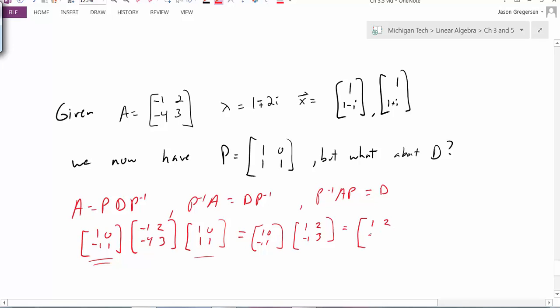And when I multiply these two pieces together, I get the matrix 1, 2, negative 2, and 1.